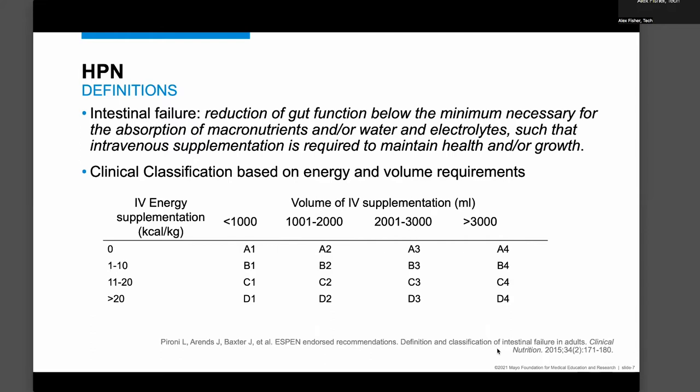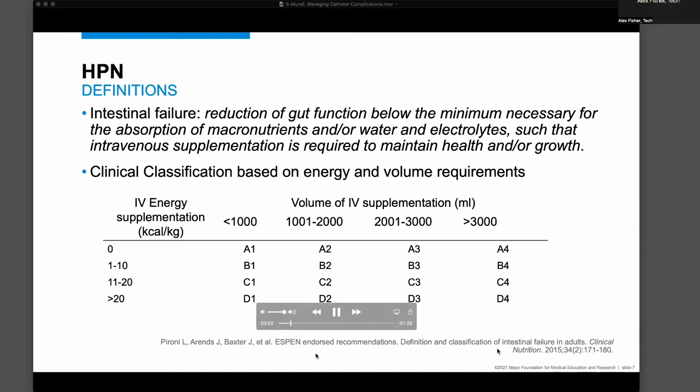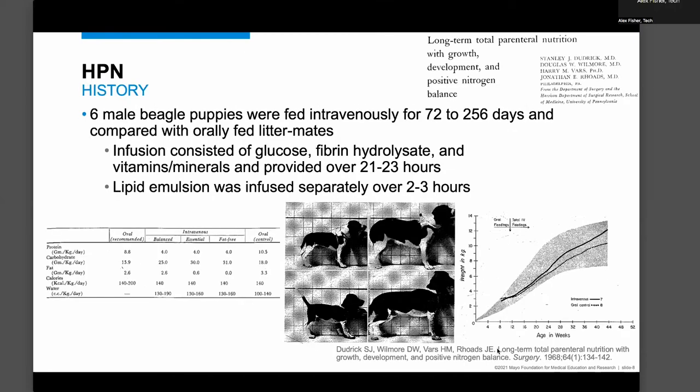We also look at how many calories and how much volume patients need. This helps us in terms of improving bowel adaptation, because we only want to provide parenteral nutrition for as long as the patient needs it — and if they're able to meet their nutritional needs through oral intake, we would love to wean off and remove the catheter.